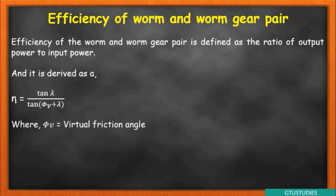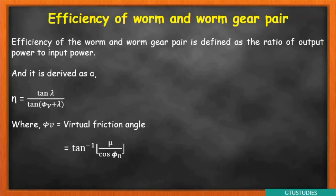φv is a friction angle not given directly in the data book. Its equation is: φv = tan⁻¹(μ / cos φn), where μ is the coefficient of friction and φn is the normal pressure angle. The normal pressure angle will be given to you. The coefficient of friction μ can be found from the data book based on the material of worm and worm gear pair. From φv and λ, you can calculate efficiency.